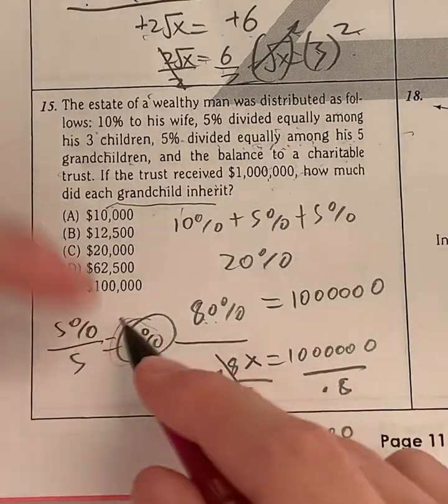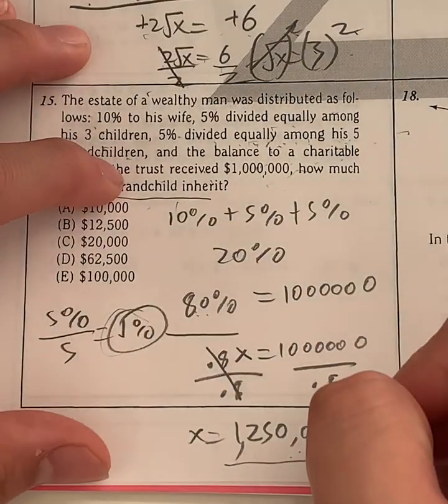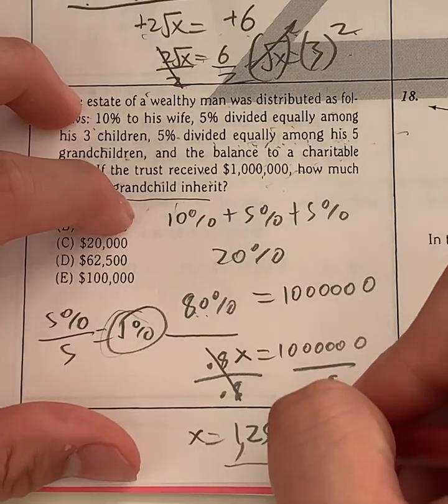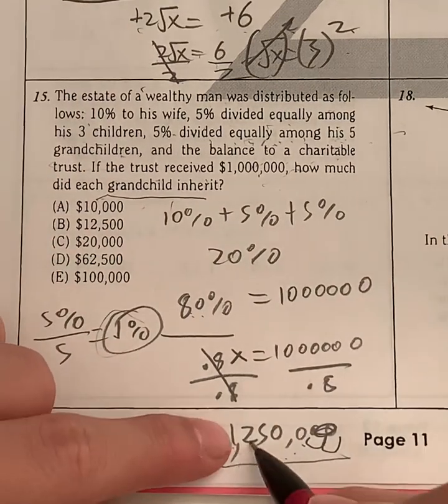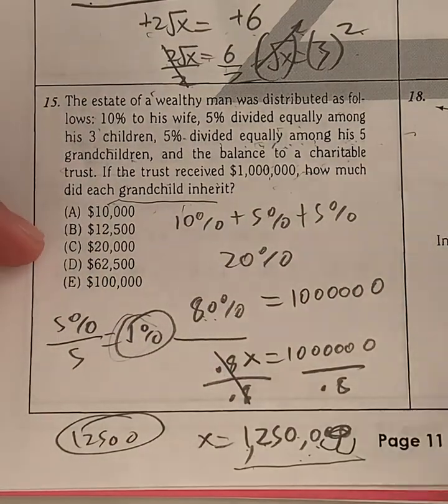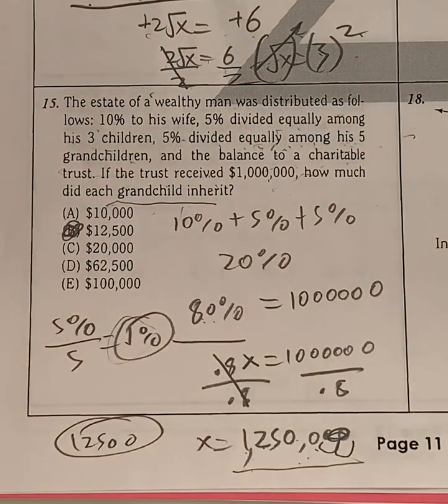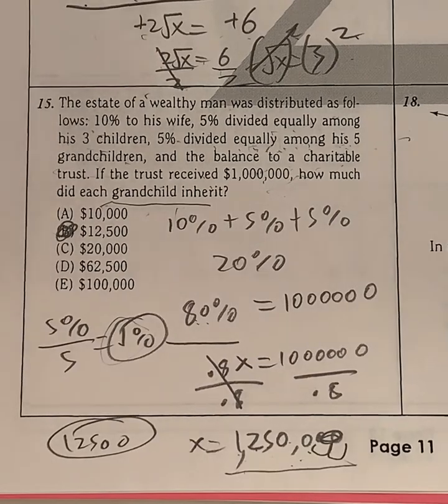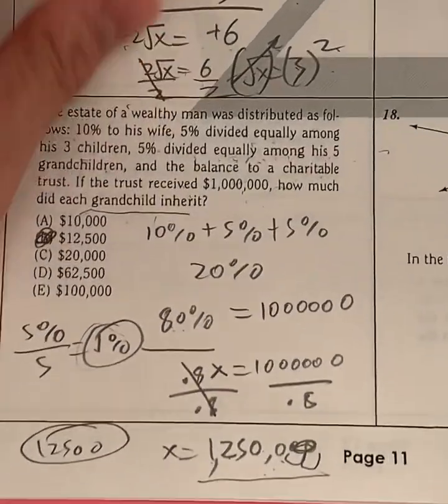So 5% was equally divided between 5 grandchildren. So if it's equally divided, 5% divided by 5 just gives us 1% per grandchild. So each grandchild received 1% of the total inheritance, which was $1,250,000. So what's 1% of this number? In order to find 1% of any number, all we have to do is move the decimal places two times: 1, 2. So the grandchild inherited $12,500, meaning your answer has to be B, the price each grandchild inherited.